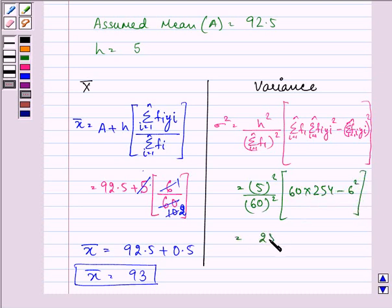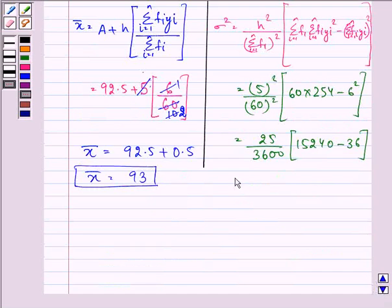That is 25 upon 3600 into 15240 minus 36 that is further equal to 25 upon 3600 into 15204.